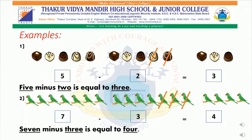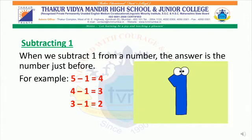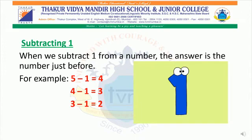So students, I hope you all have understood the concept of subtraction. Subtracting 1: when we subtract 1 from a number, the answer is the number just before. For example, 5 minus 1 is equal to 4. 4 minus 1 is equal to 3. 3 minus 1 is equal to 2.